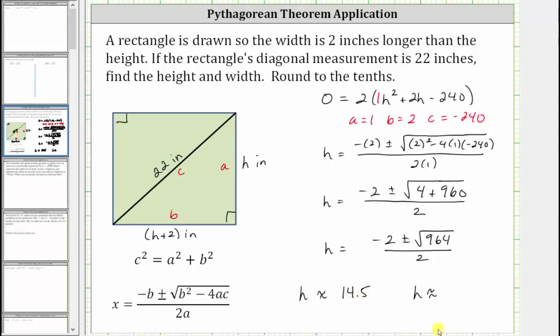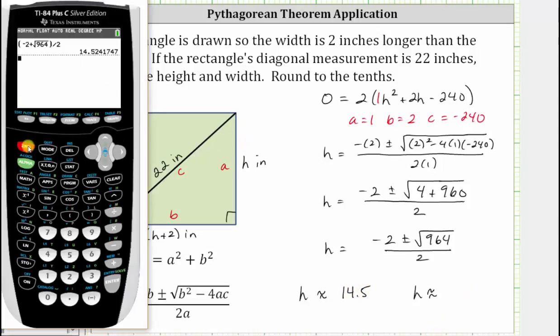And then for the second solution, we can just press second enter, and then change the addition sign to a subtraction sign, and press enter. H is also approximately negative 16.5.